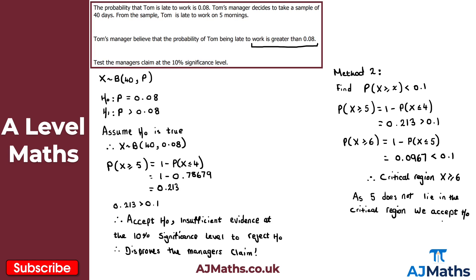It shouldn't come as a surprise that we reach the same conclusion — we've just used a slightly different method. Both methods yield the same result: accept H0, with the same conclusion about insufficient evidence. It's up to you which method to use, but sometimes the question will specifically ask you to use critical regions, so make sure you're comfortable with both.